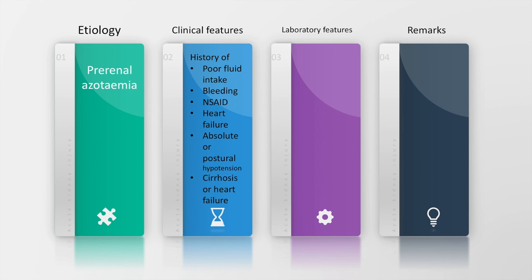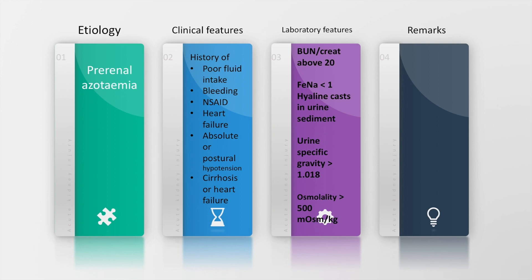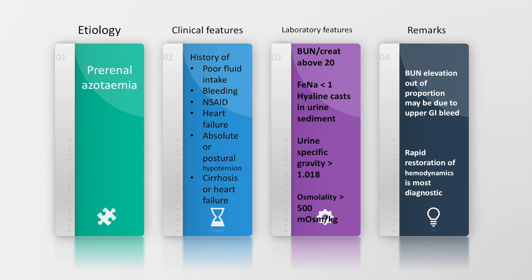In pre-renal azotemia, clinical features may include history of poor fluid intake, bleeding, history of intake of NSAIDs, heart failure, and there may be absolute or postural hypotension on clinical examination. The patient may also have features of cirrhosis or heart failure. Lab features include a BUN to creatinine ratio of more than 20, a fractional excretion of sodium of less than 1%, hyaline casts in the urine sediment, and an increased urine specific gravity with a urine osmolality generally more than 500 milliosmoles per kg.